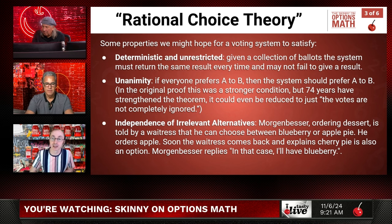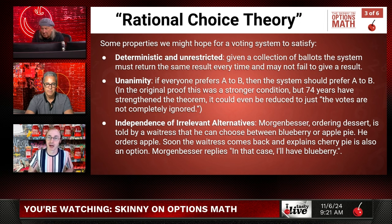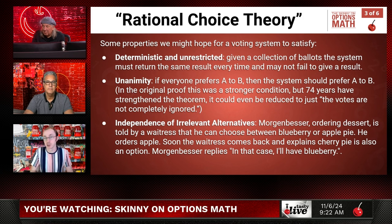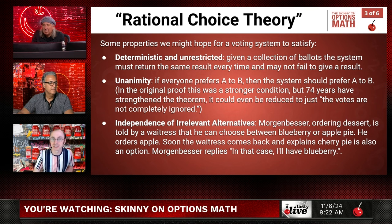The last condition is called Independence of Irrelevant Alternatives, or IIA. The philosopher Morgan Besser gives a great example: he goes to a restaurant and, given the choice of blueberry pie or apple pie, he orders apple pie. The waitress comes back and says they also have cherry pie. 'In that case, I'll have the blueberry pie.' IIA says that if the voting system outputs A over B, the introduction of C shouldn't change the relative order of A and B — C can come in anywhere, but it shouldn't flip A and B. Unfortunately, that's the condition that turns out to be impossible to maintain in reality.